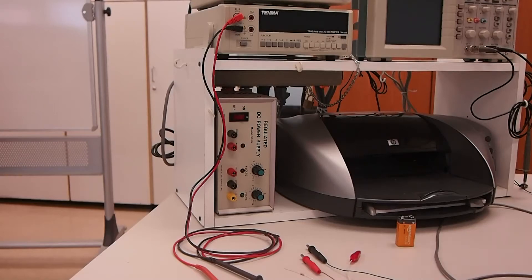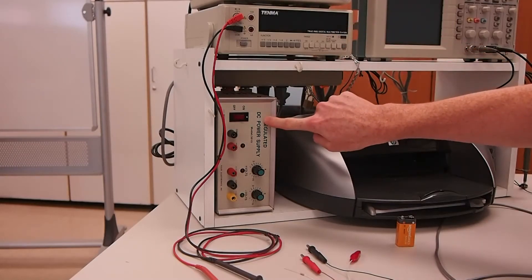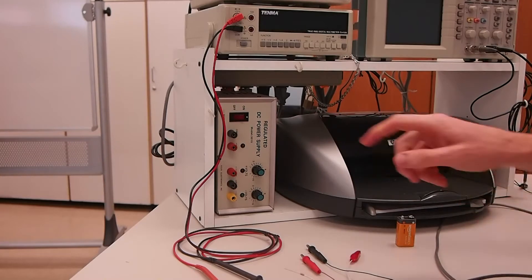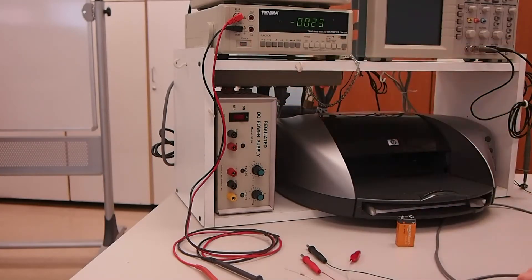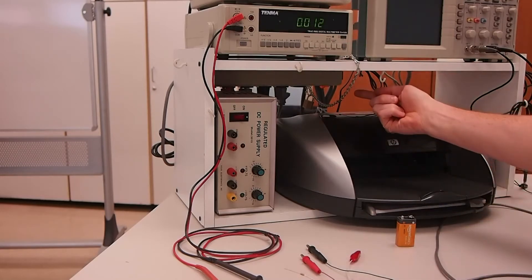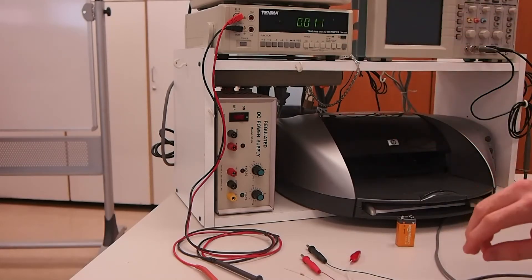In this video I'm going to demonstrate how to use the multimeter and the DC power supply. The multimeter you should be able to turn on just by pressing the power button here. If you can't get it to turn on, check the power strip underneath and maybe the connections to the wall.